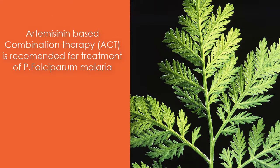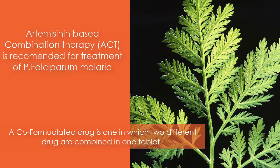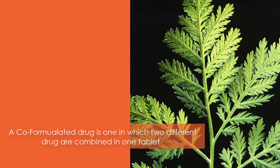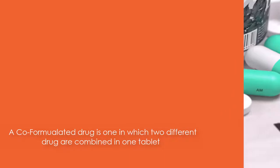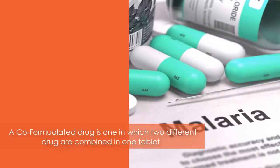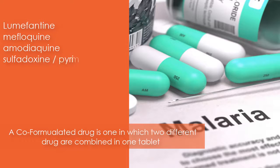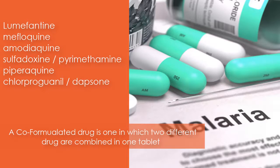Currently, artemisinin-based combination therapy is recommended for the treatment of P. falciparum malaria. Fast-acting artemisinin-based compounds are combined with a drug from a different class. A co-formulated drug is one in which two different drugs are combined in one tablet — this is important to ensure both drugs are used. Companion drugs include lumefantrine, mefloquine, amodiaquine, sulfadoxine/pyrimethamine, piperaquine, and chlorproguanil/dapsone.